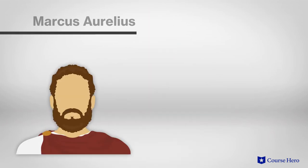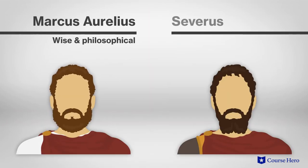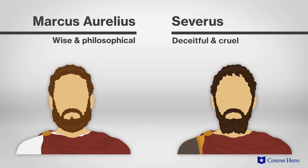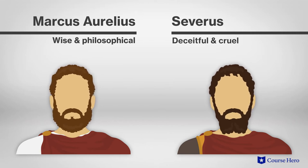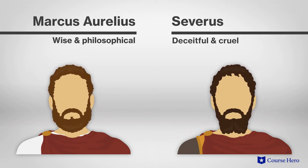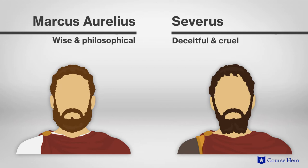Machiavelli provides a number of historical examples to deal with possible objections to his points about conspiracies, especially those of Marcus Aurelius and Severus. Marcus was a wise and philosophical emperor who ruled easily until his death despite being too compassionate. Severus was a deceitful and cruel emperor who ruled until his death despite being hated.